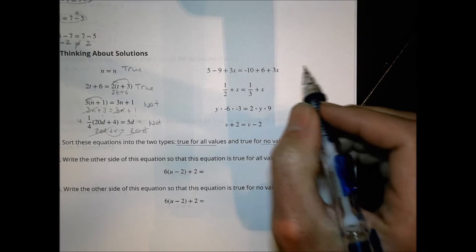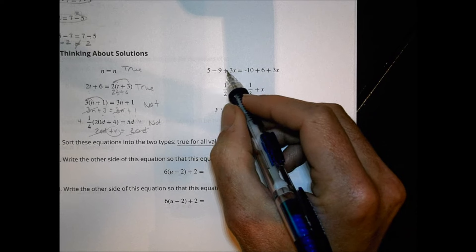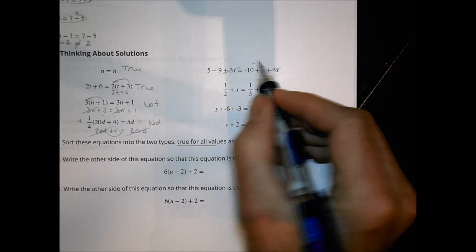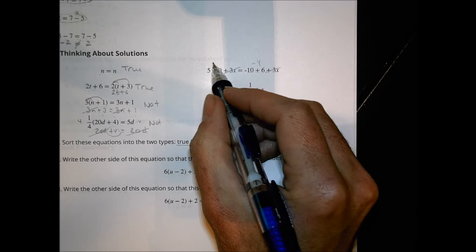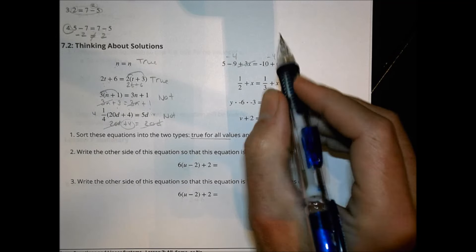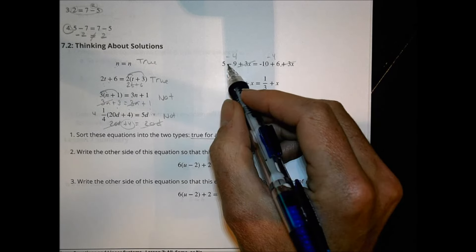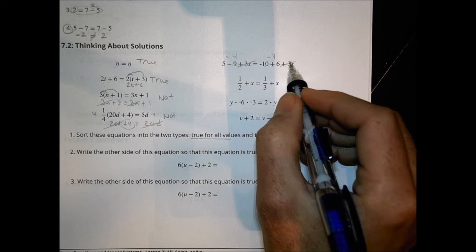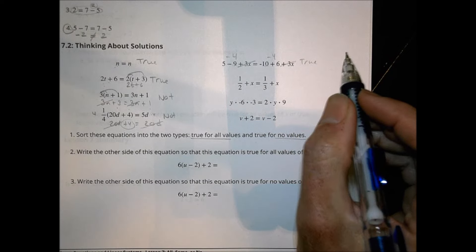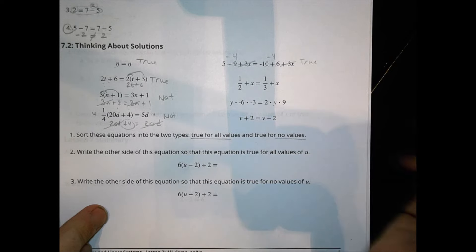On the next one, we have 5 minus 9 plus 3x, and negative 10 plus 6 plus 3x. The 3x's cancel each other out. You're left with negative 10 plus 6, which is negative 4. And 5 minus 9 is negative 4 as well. So you have negative 4 plus 3x on both sides — that looks like it would be true for all values. 5 minus 9 is negative 4, negative 10 plus 6 is negative 4, and 3x equals 3x. It's going to be balanced on both sides.